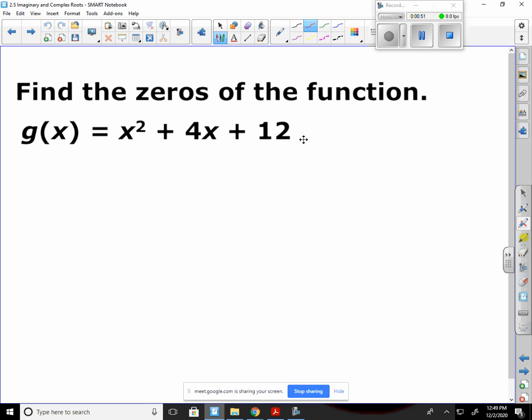We're going to set this equal to zero, and we're going to subtract this 12 over to the other side. x squared plus 4x equals negative 12. Now we're going to complete this square here. So we're going to do 4 divided by 2 squared. 4 divided by 2 is 2, squared is 4. So I add 4 to both sides.